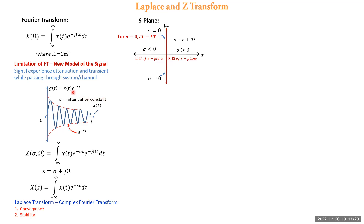When σ = 0, e^(−σt) becomes 1 and hence Laplace transform becomes Fourier transform. So when the Laplace transform is evaluated on the jω axis for which σ = 0, it is nothing but the Fourier transform. This is the simple interrelationship between Fourier transform and Laplace transform.